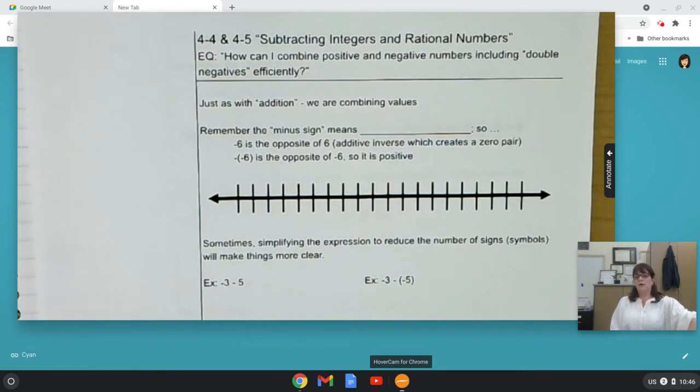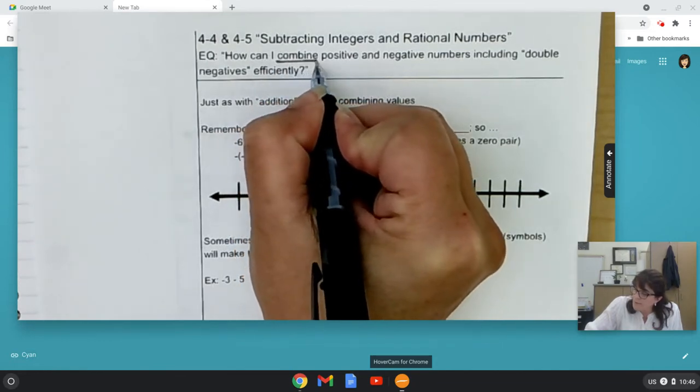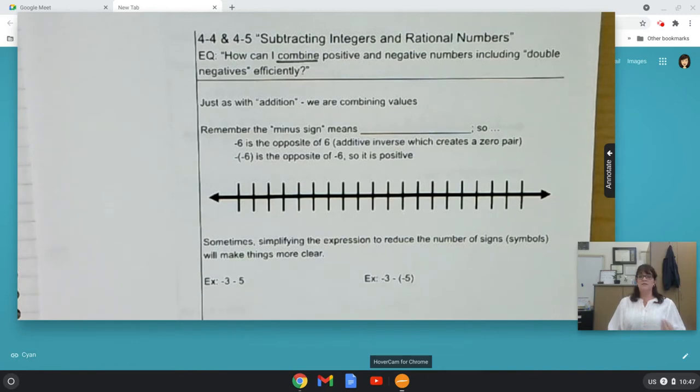Now, I'm kind of disagreeing with myself in these lesson titles, but I'm trying to match them up with our curriculum. I don't want you to think about adding or subtracting. I want you to think about this word again, combining. How can I combine positive and negative numbers, including double negatives, efficiently?